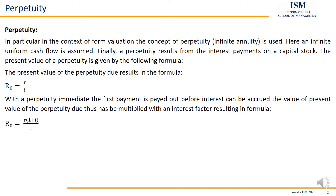So the difference here is: do I multiply by 1 plus i, or don't I? This is the idea of simply getting the value today. I can do the same thing if I turn this around and solve for R — saying I have a certain amount of money, how much can I get each period if my interest rate is such-and-such? I'm just solving for R.